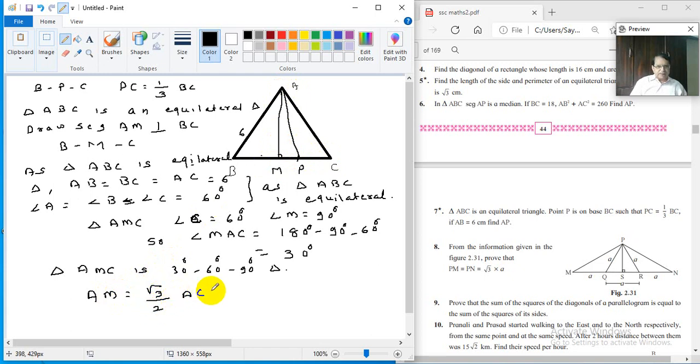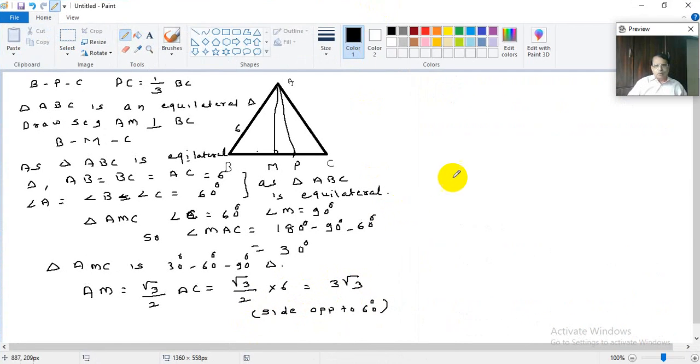AC is 6. So AM will be root 3 by 2 times 6, that means it is 3 root 3. Here we are using the fact that AM is side opposite to 60 degrees. So AM we got to be 3 root 3.